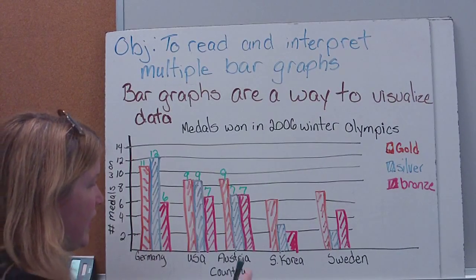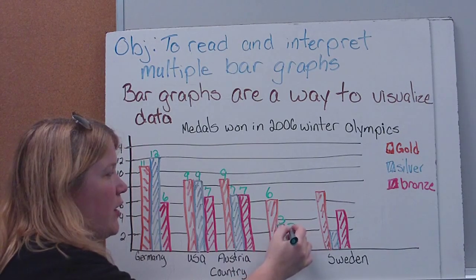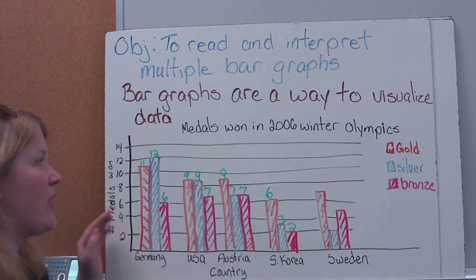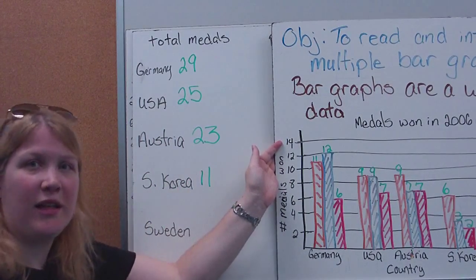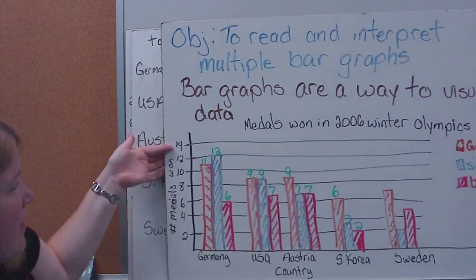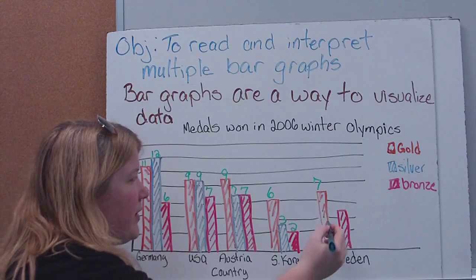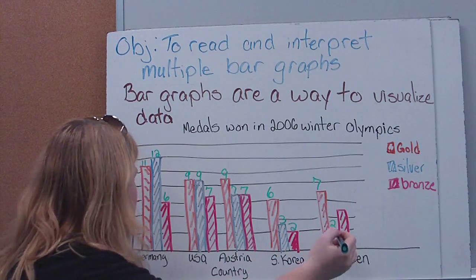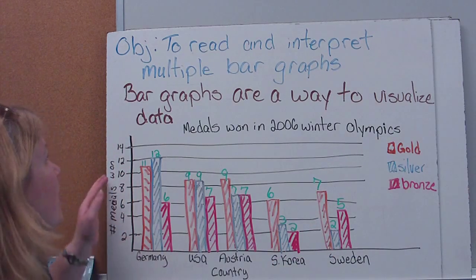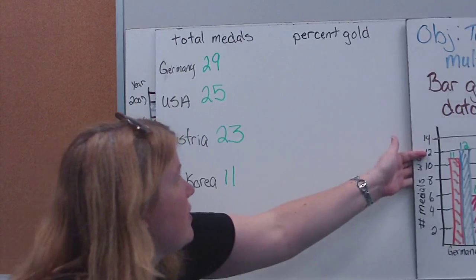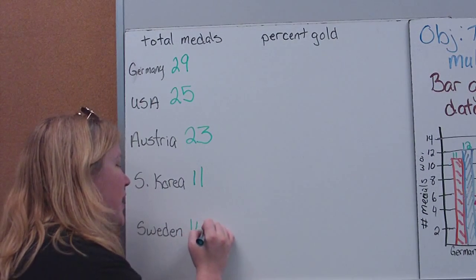South Korea had 6 gold, 3 silver, 2 bronze — 11 total medals. Finally, Sweden has 7 gold, 2 silver, 5 bronze — 14 medals altogether.